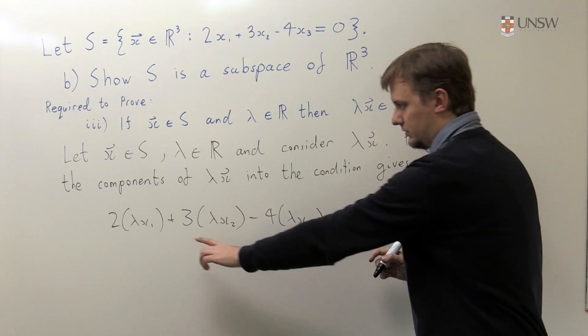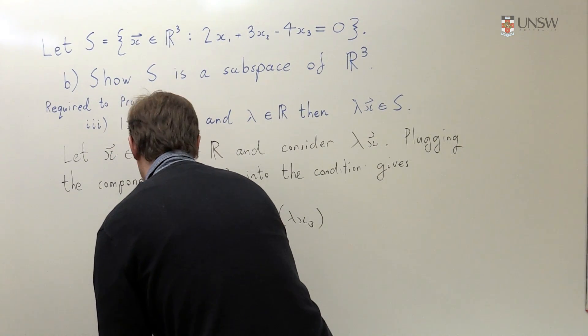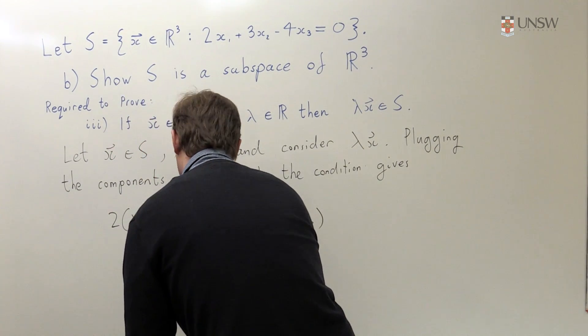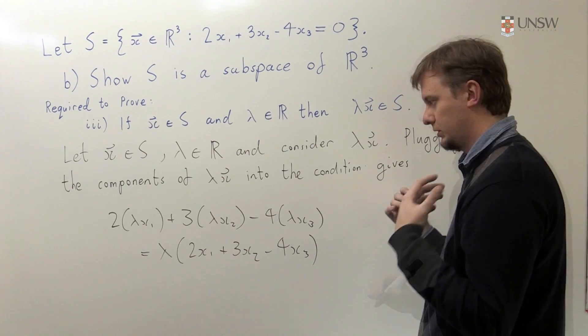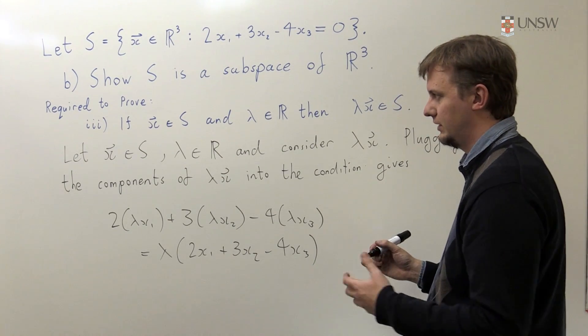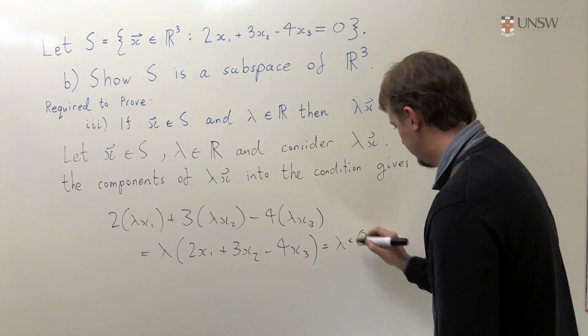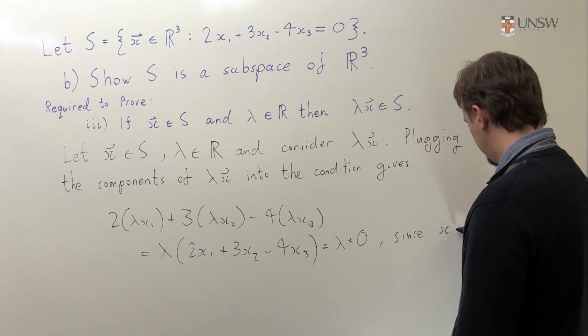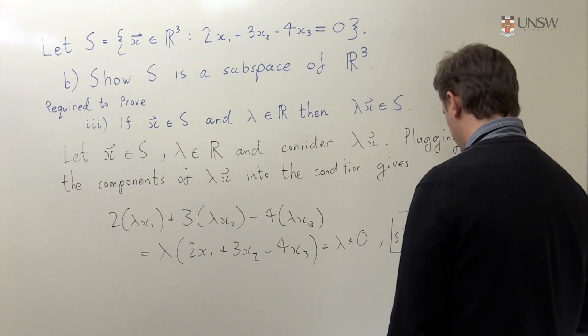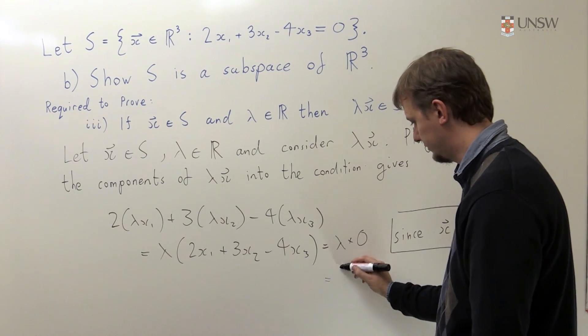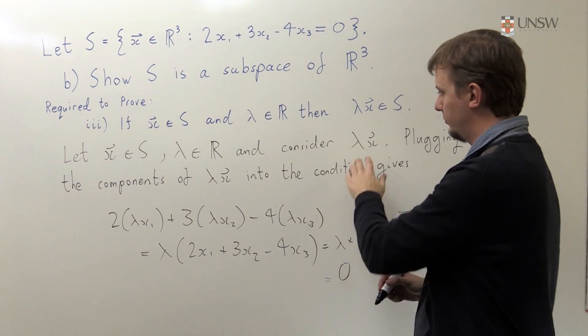Now quite nicely, if I look at this there's a lambda in every term, so this will be the same as lambda times (2X1 + 3X2 - 4X3). Because X is a vector in S, you know this quantity here must be 0. So this is lambda times 0 since X is in S, and lambda times 0, well that's just 0.